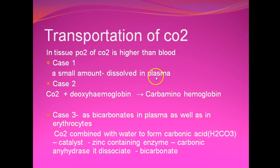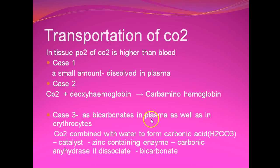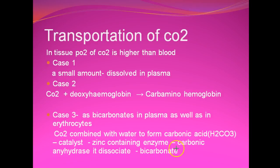So there are three cases: first, a small amount dissolved in plasma; second, carbon dioxide in erythrocytes combines with deoxyhemoglobin to form carbaminohemoglobin; third, as bicarbonate in plasma as well as in erythrocytes. In plasma, the enzyme carbonic anhydrase is absent, but in erythrocytes the zinc-containing enzyme carbonic anhydrase catalyses the reaction — the formation of carbonic acid. Therefore, the formation of carbonic acid is higher in erythrocytes than in plasma.